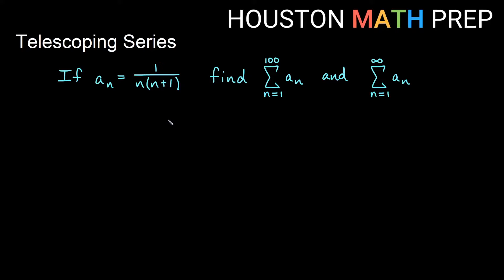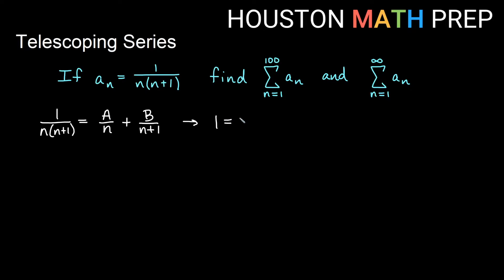Oftentimes when you're doing telescoping series, we use the process of partial fraction decomposition to break this up into two fractions. If I think of 1 over n times n plus 1 and want to write that in terms of partial fractions, I'll write that as A over n plus B over n plus 1. I would get a common denominator and then solve the numerators. If you're having any trouble with partial fractions, check out our videos on partial fractions for some basic help.